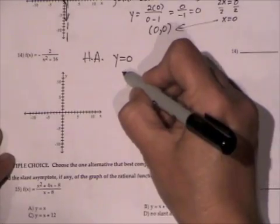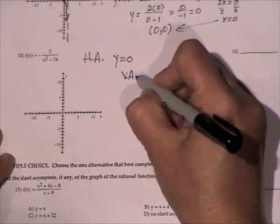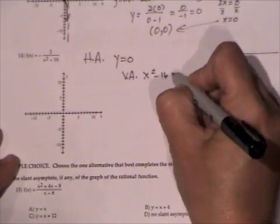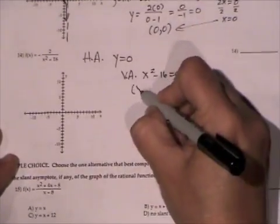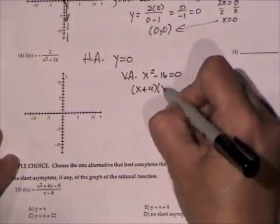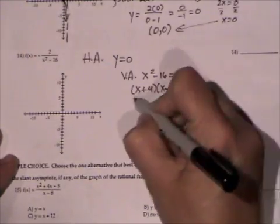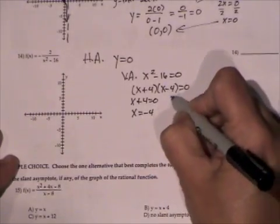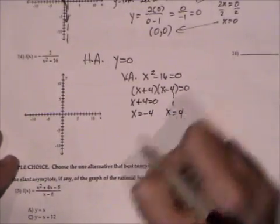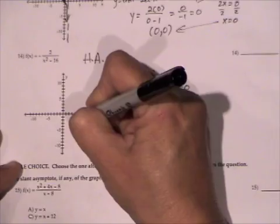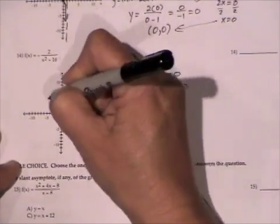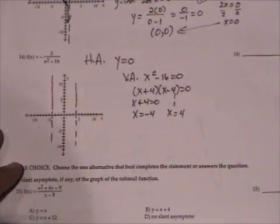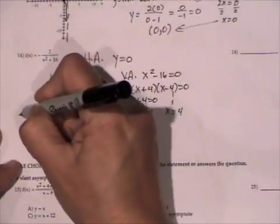And the vertical asymptote is always where the bottom is equal to zero. So if we factor the left side and set each factor equal to zero, we get x equals negative four as a vertical asymptote, and then we'll get x equals four. So we're getting two vertical asymptotes, and the horizontal asymptote is y equals zero, which is the x-axis.